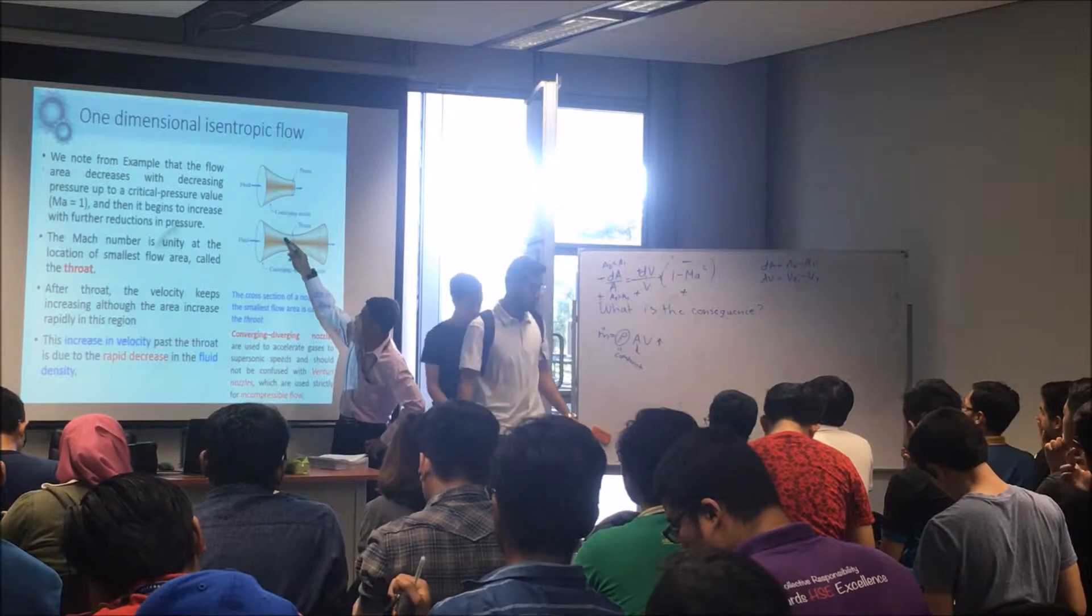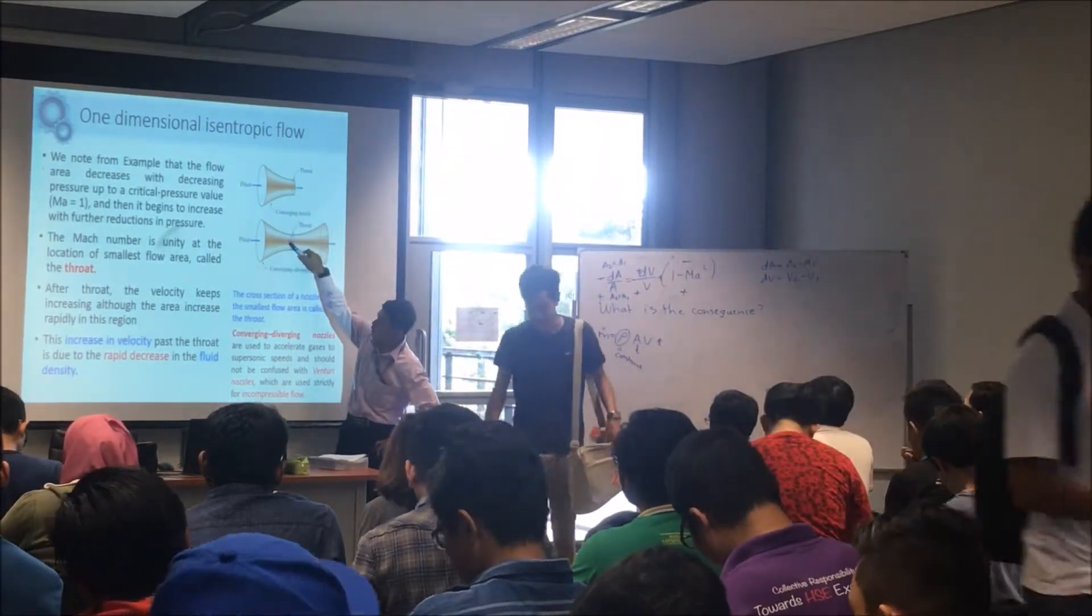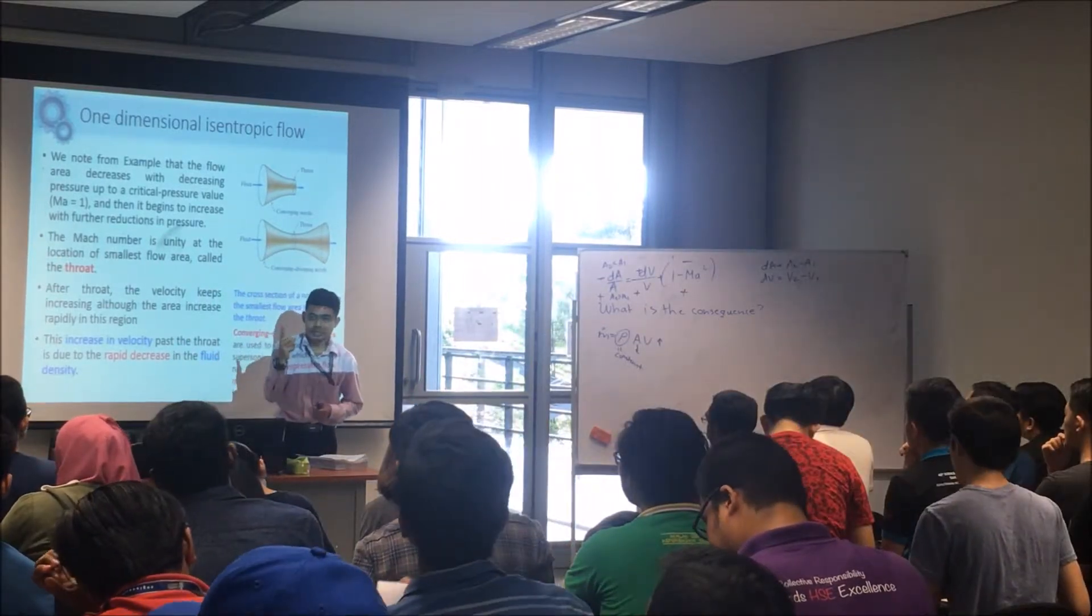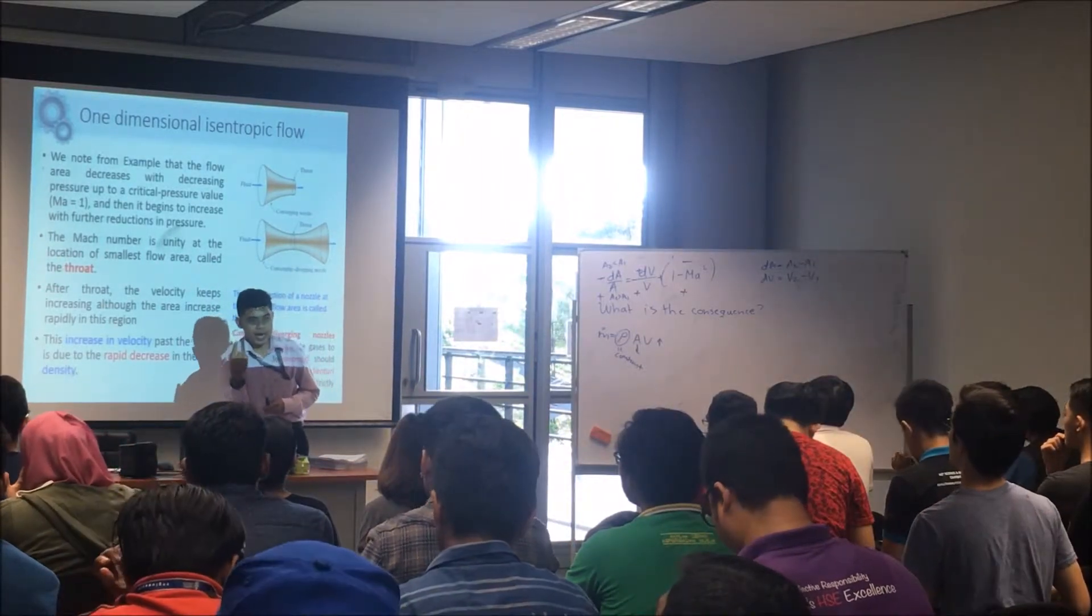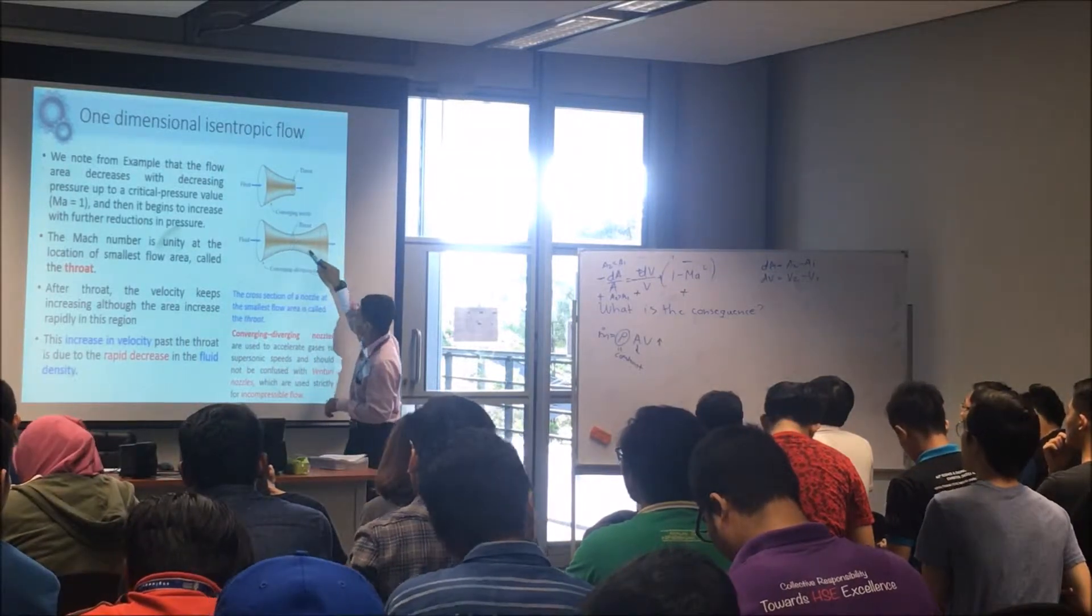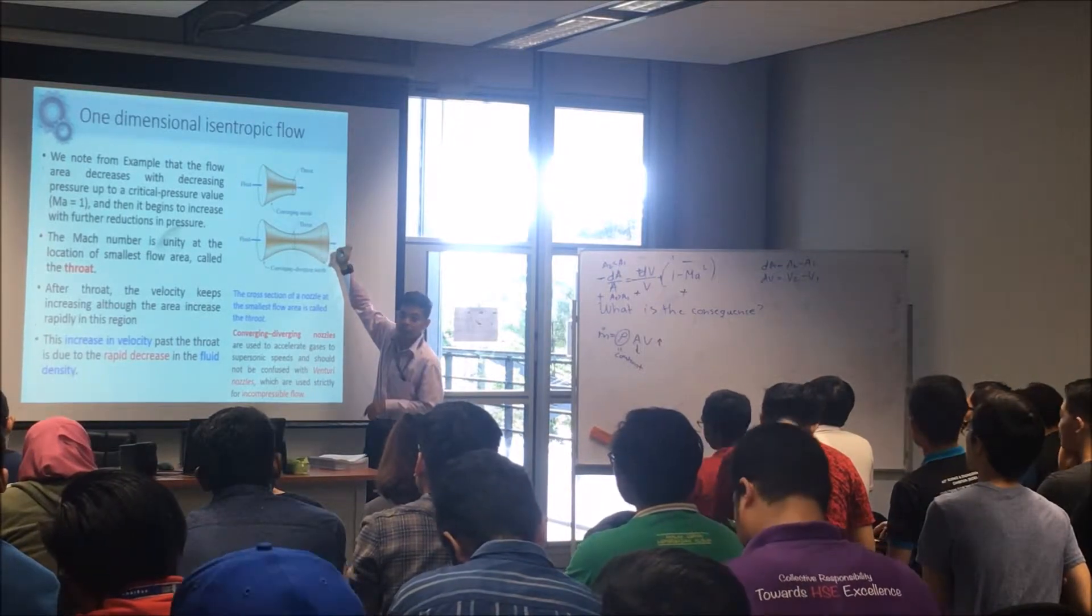When you have a supersonic flow at the throat, the Mach number is unity. So the Mach number is one when you have a very high velocity. After the throat, the velocity keeps increasing even though the area is increasing.